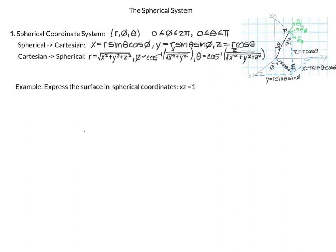The next problem: express the surface xz = 1 in spherical coordinates. This is fairly straightforward — substitute x = r sin(θ) cos(φ) and z = r cos(θ), multiply them together, and set equal to 1.